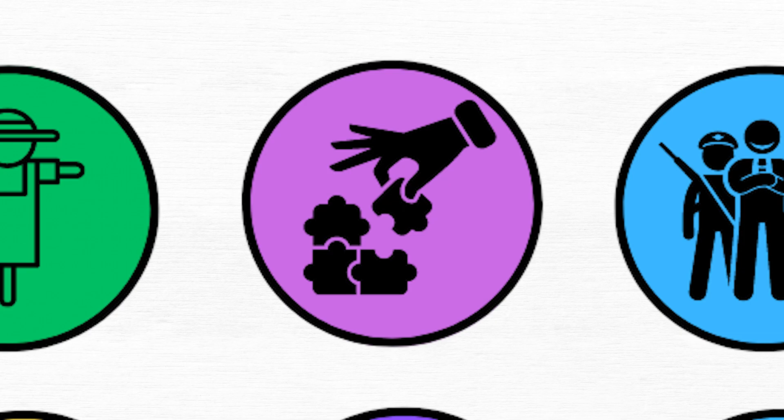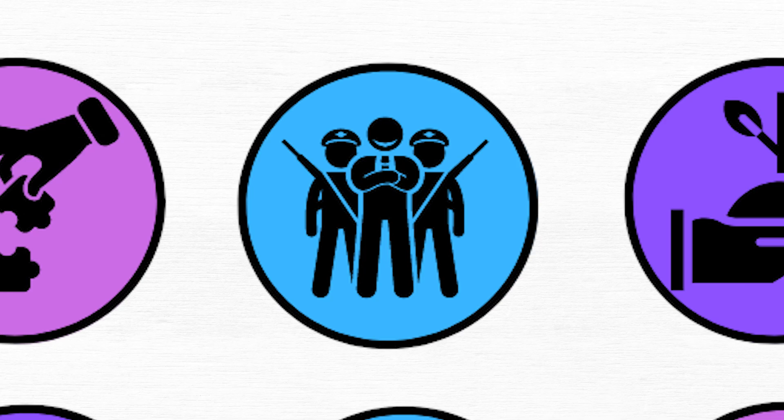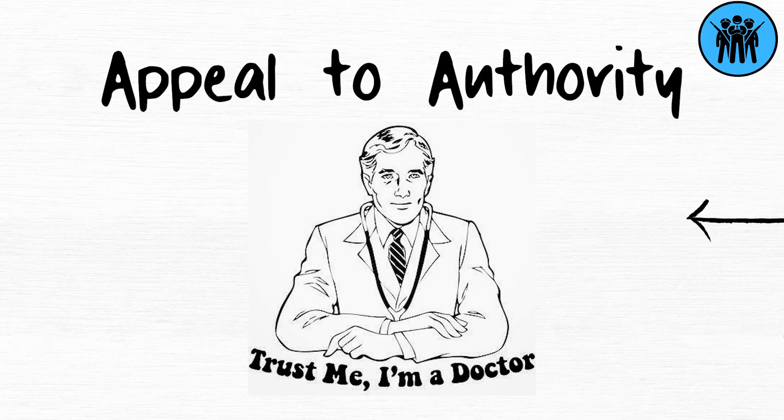Circular reasoning restates the conclusion rather than offering evidence. Appeal to authority relies on the status of the person making the argument rather than the argument itself.